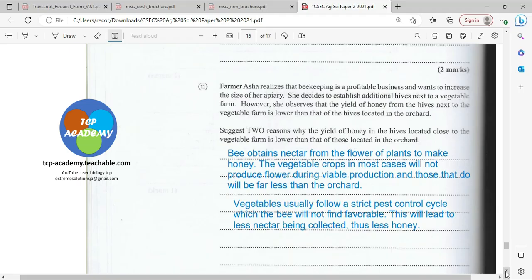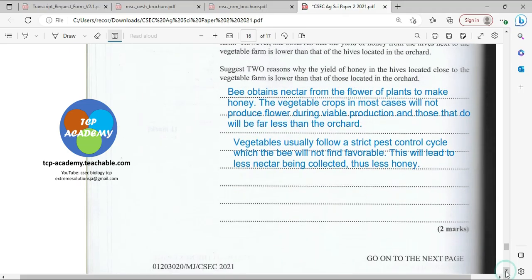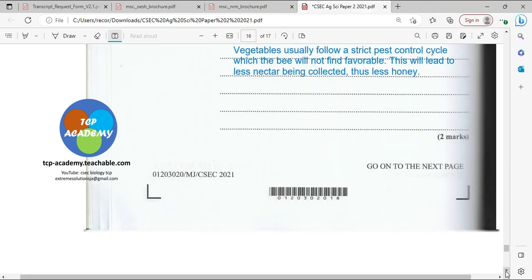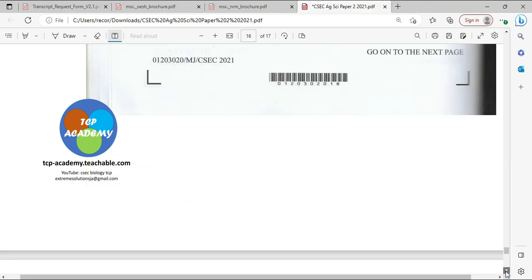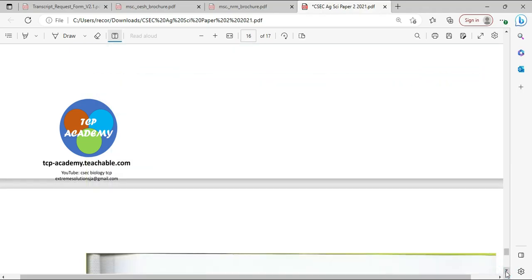Now vegetable crops usually follow a strict pest control cycle which the bees will not find favorable. If the bees are not finding this favorable, then naturally they are not going to be in this field as much collecting nectar. And of course, if we are not collecting nectar, then we are not going to be producing honey. The pest control mechanism might hinder the bee from collecting nectar, or of course the bee itself might just not find this area favorable.